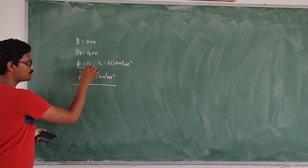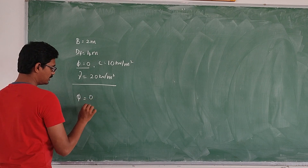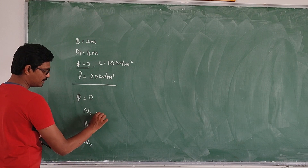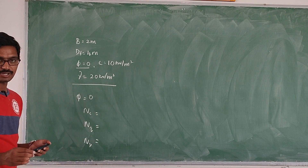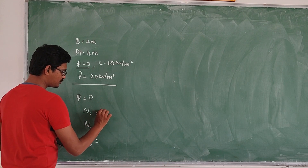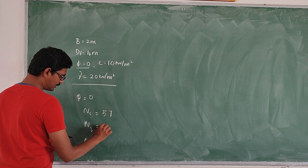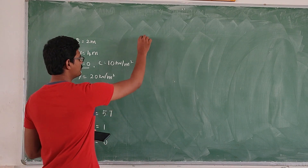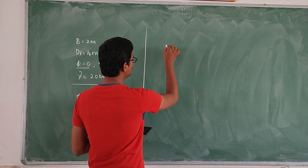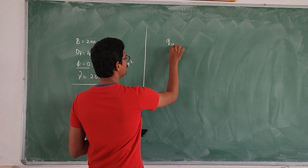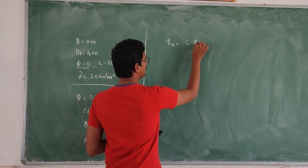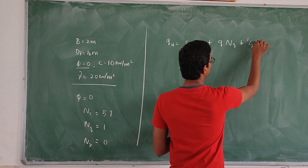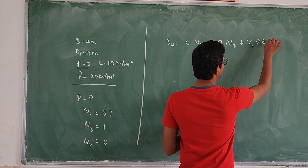Corresponding to phi equal to 0, we have to find out the Terzaghi bearing capacity factors: Nc, Nq, and N-gamma. The Nc value is 5.7, Nq value is 1, and N-gamma value is 0. For strip footing, according to the Terzaghi bearing capacity theory, Qu equals C·Nc plus Q·Nq plus half times gamma times B times N-gamma.